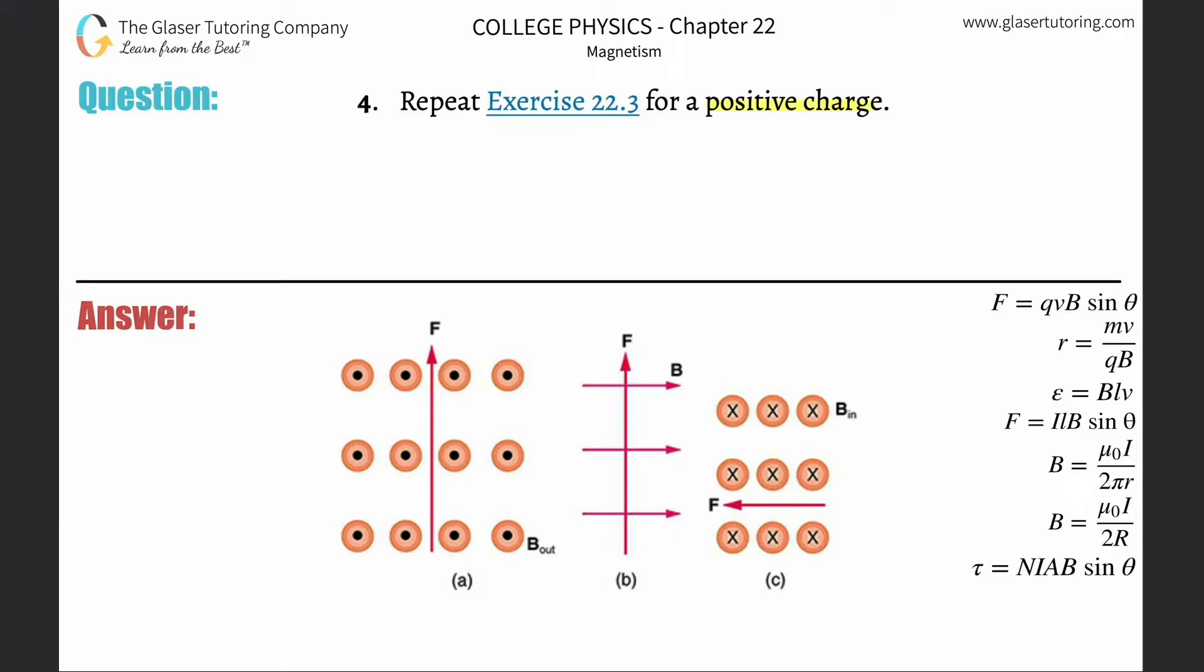Also check out number two, which I did for a negative charge as well. Now for a positive charge, we use right-hand rule number one: the thumb represents the velocity, the four fingers represent the magnetic field B...